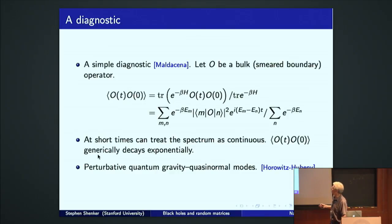It's really a smeared boundary operator in ADS-CFT. And think about the two-point function as a function of time of this operator. Well, let's evaluate it using boundary variables. It's just some thermal expectation value of some quantity in the large black hole case. Inserting complete sets of states is just this double sum over states of the conformal field theory.